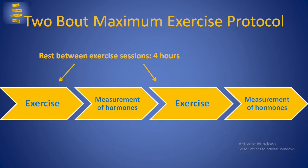Till date, no tests have been validated for diagnosing overreaching, making it difficult to come up with exact prevention strategies. However, the two-bout maximum exercise protocol devised by Meeusen and colleagues in 2010 is the best test available so far. It is a performance-based test used to differentiate the three conditions. In this protocol, two exercise sessions of maximum intensity are separated by a rest period of four hours, and at the end of each session, levels of two hormones — ACTH (adrenocorticotropic hormone) and prolactin — are measured to categorize the person into FOR, NFOR, or overtraining syndrome.